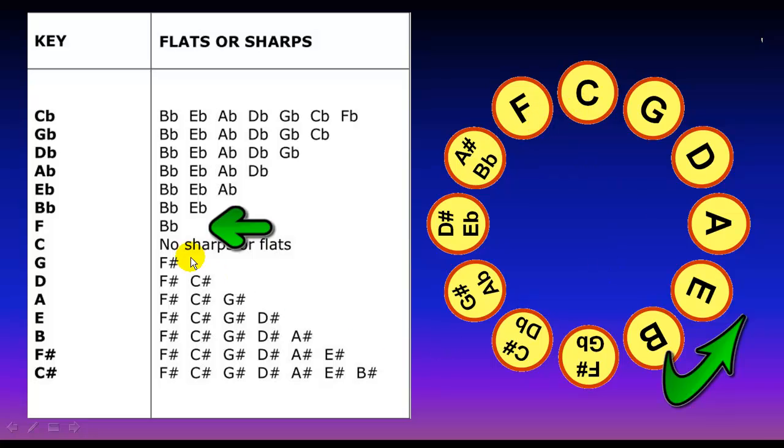For the circle of fifths, F has one flat, B flat. B flat has two flats. You add the E flat. So it is B and E. So it is B flat and E flat.